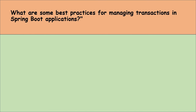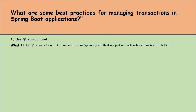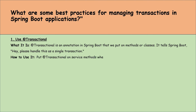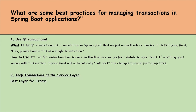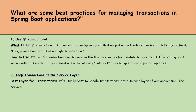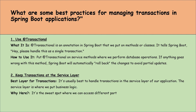What are some best practices for managing transactions in a Spring Boot application? First, use the @Transactional annotation — it tells Spring Boot to handle a method or class as a single transaction. Put the @Transactional annotation on service methods where we perform database operations. If anything goes wrong, Spring Boot will automatically roll back the changes to avoid partial updates. Second, keep transactions at the service layer — it's usually best to handle transactions there, where business logic lives, allowing access to different parts of the application while keeping things organized.